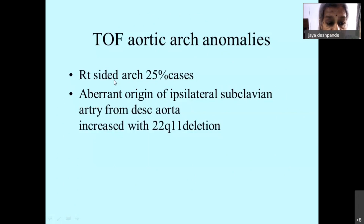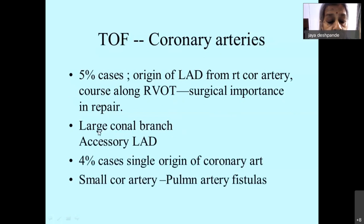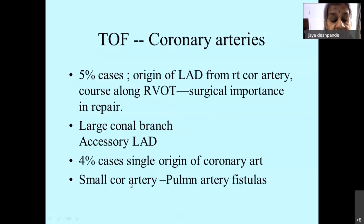The 25 percent incidence of right-sided aortic arch is important when planning palliative procedures such as aortopulmonary shunts. There can be no apparent origin of the subclavian artery from the descending aorta. Coronary artery anomalies occur in 5 percent — the LAD may arise from the right coronary and course along the right ventricular outflow tract, which is of surgical importance. A large conal branch or accessory left anterior descending artery occurs in 4 percent. In pulmonary atresia, coronary artery-to-pulmonary artery fistulas are common.